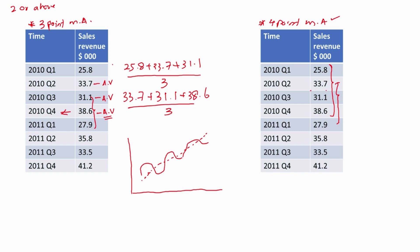The middle position for the first average value is here, and for the next average value, it will lie here. So these average values do not align with any quarter — they lie between the quarters.